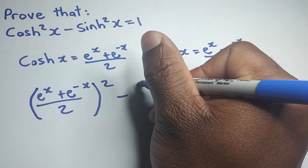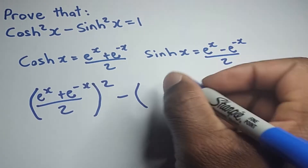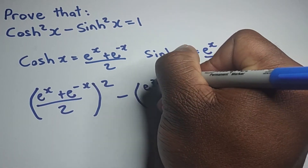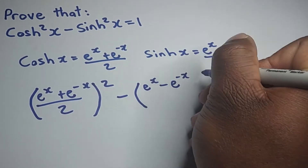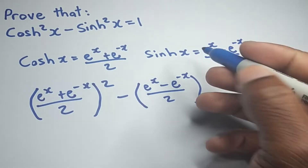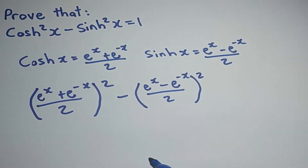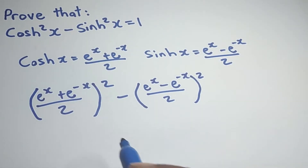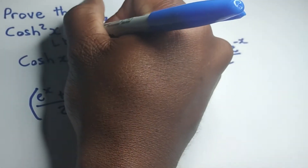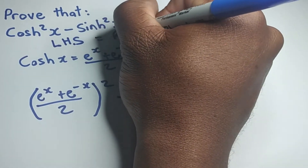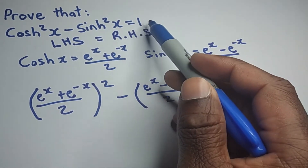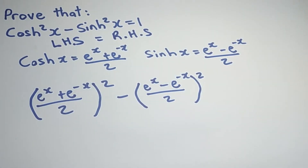What we want to prove here is that the left hand side will be equal to the right hand side. So when we simplify this, we should obtain 1 right here. Let's see what we can do now.